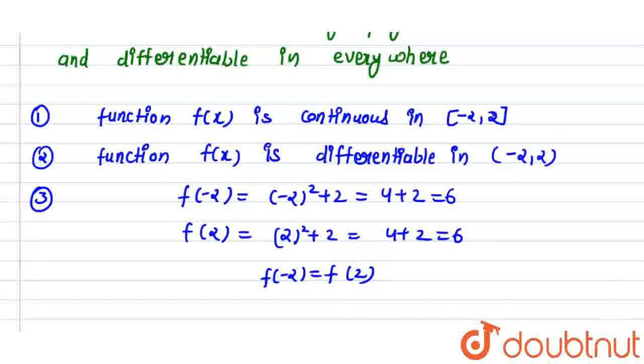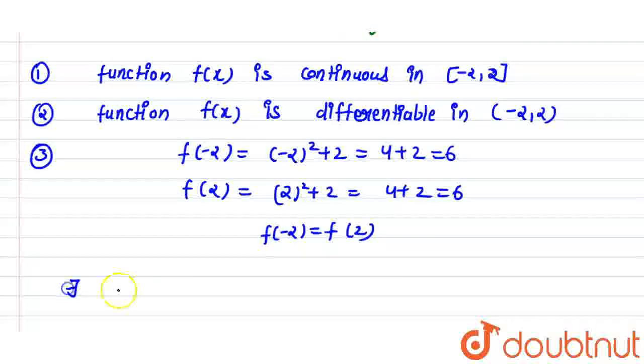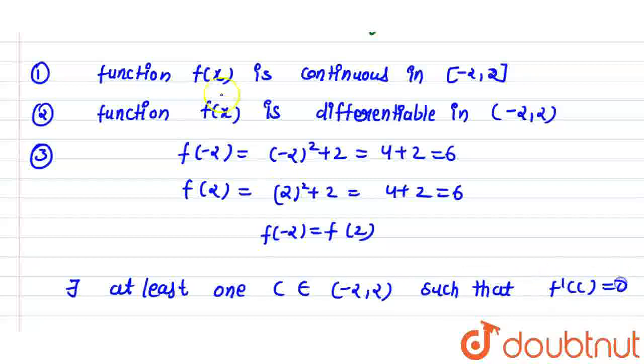So in that final condition we can see that it will be equal, then there exists at least one c belongs to open interval minus 2 to 2 such that f'(c) is equal to 0. This time from f'(c) is equal to 0 we will find some c.